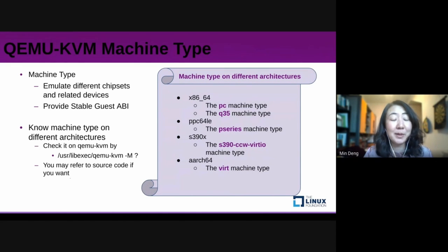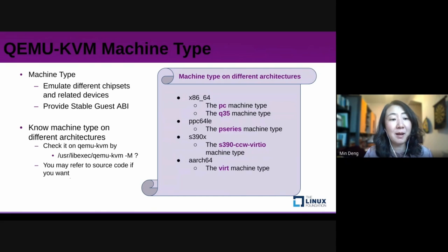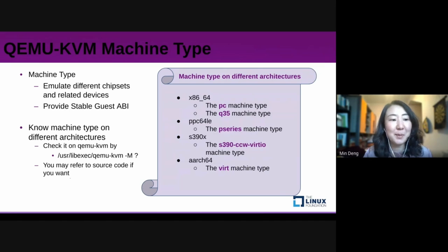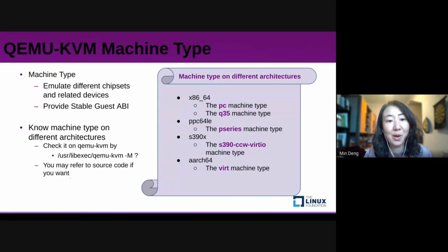How does machine type affect Stable Guest ABI testing? This slide shows machine types on different architectures. First, machine type helps to emulate different chipsets and related devices, such as PC and Q35 on X86. Second, it provides Stable Guest ABI — virtual hardware remains the same regardless of changes in host software or hardware. To know which machine types are supported on QEMU-KVM, we have two ways: with a simple command, or by checking QEMU's source code.